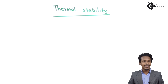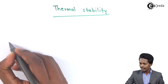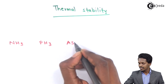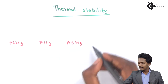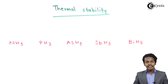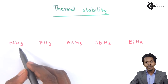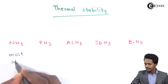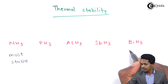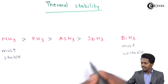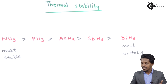The second property is thermal stability. Considering the hydrides: NH3 (ammonia), PH3 (phosphine), AsH3 (arsine), SbH3 (stibine), and BiH3 (bismuthine). If we move from top to bottom, that is from nitrogen to bismuth, it has been found that ammonia is the most thermally stable, while bismuthine is the most unstable. So the order of thermal stability decreases from ammonia → phosphine → arsine → stibine → bismuthine.